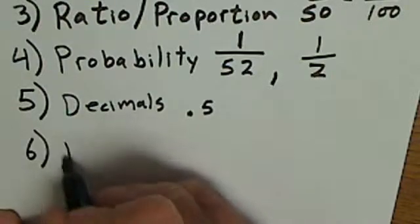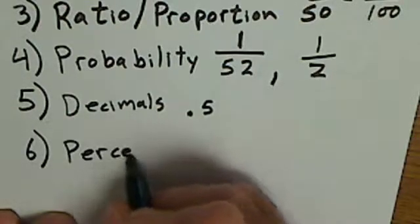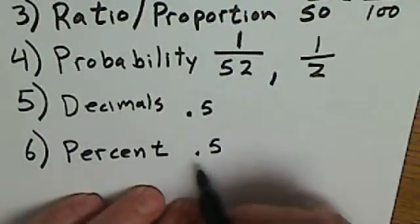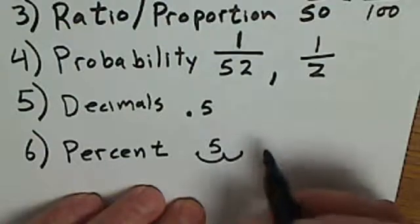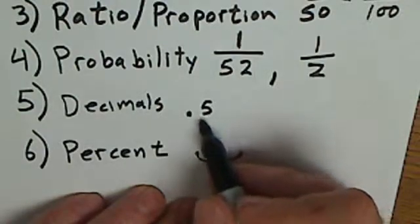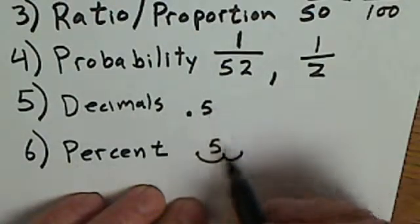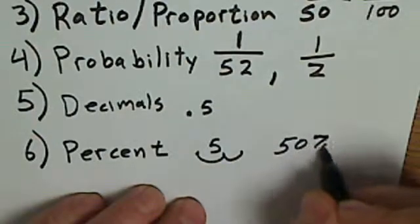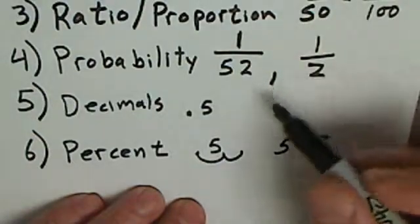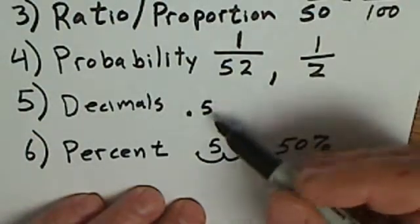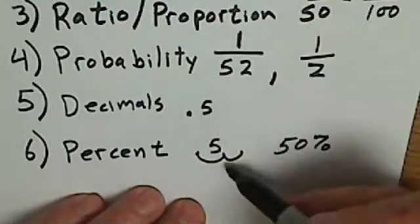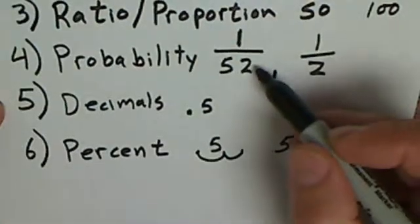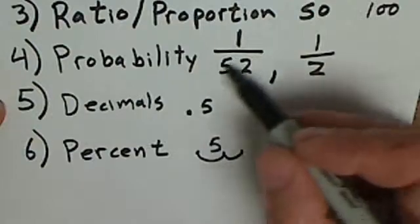Number six is percentage. A percent is really the same thing as a decimal. I take .5 and I move it over two places. So rather than a decimal being .5 of one, the percent is 50% of 100. So they're all fractions. A decimal is out of one. A percent is out of 100. A probability is out of the number of possible outcomes.